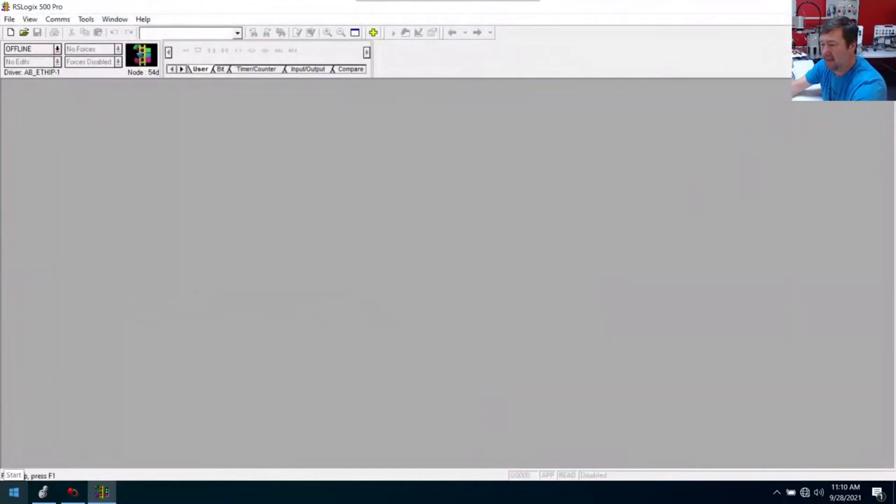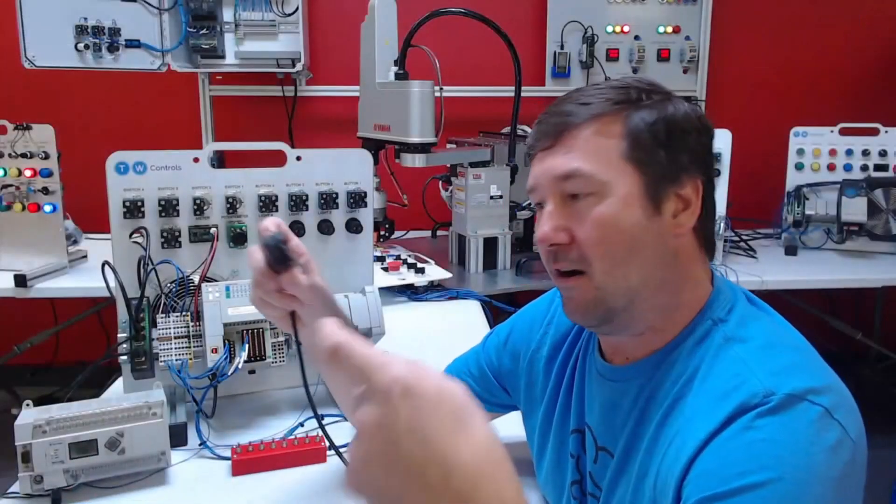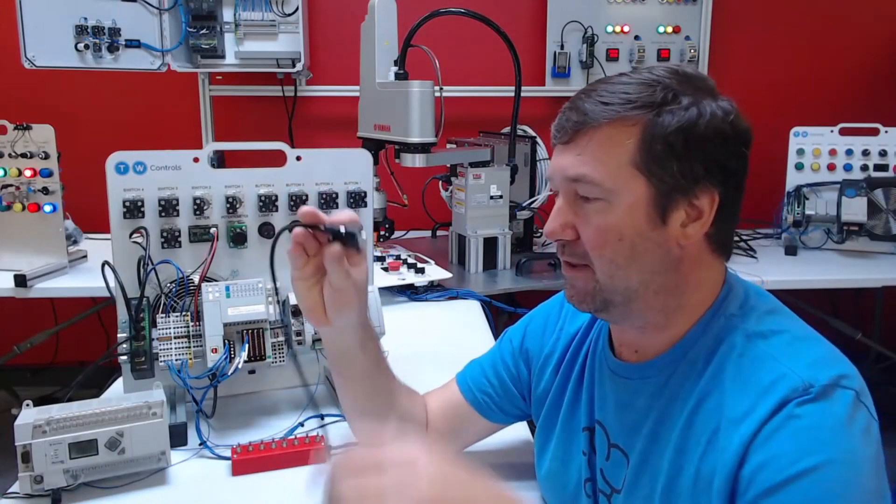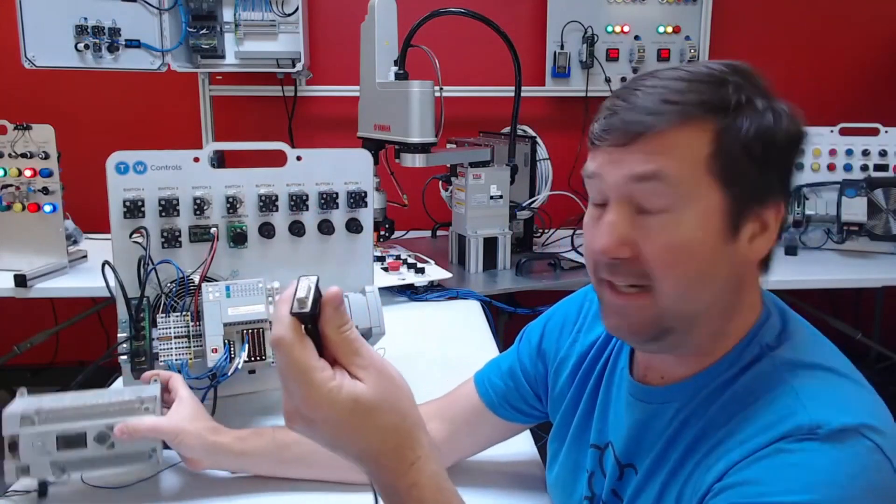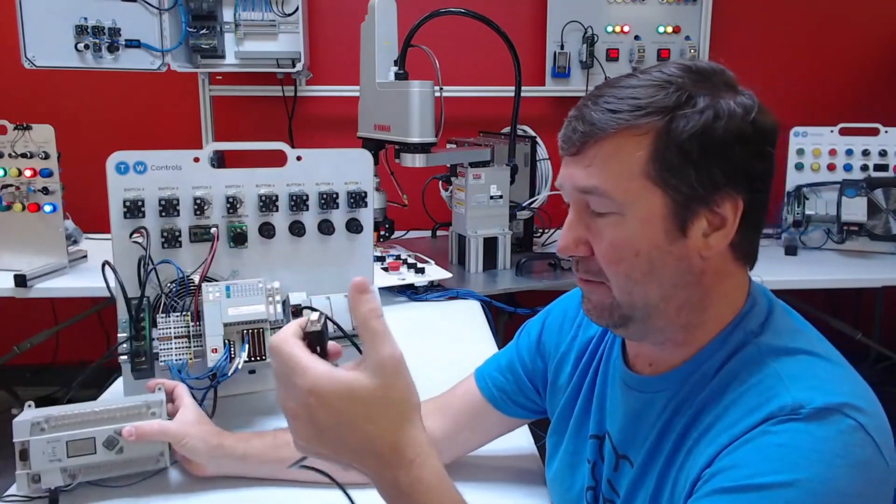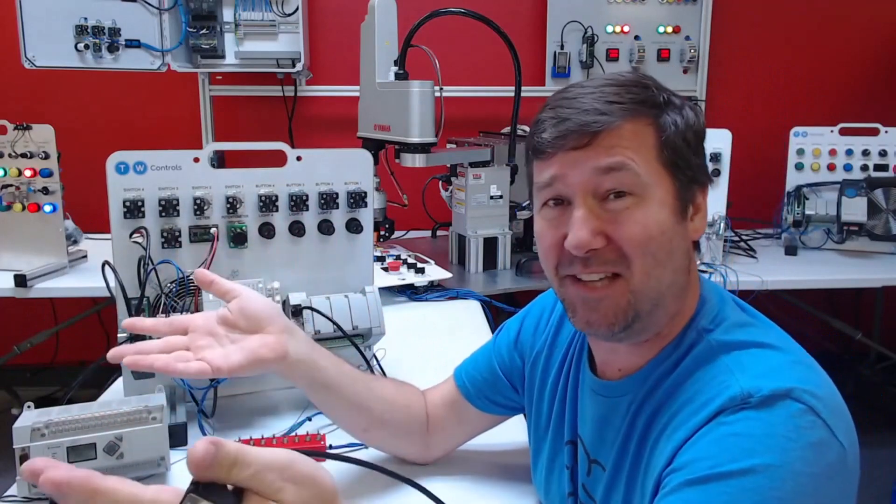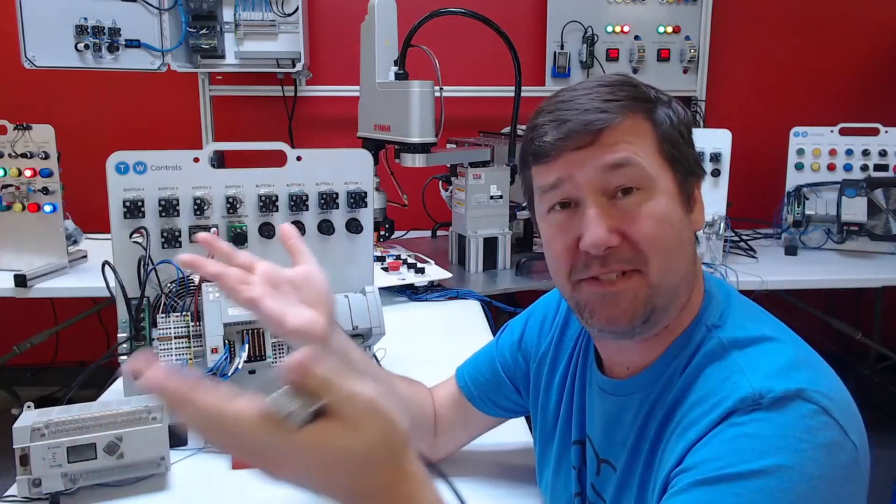But okay first let's talk about connecting our 1747 or a serial cable. And we're going to do that with this Micrologix. And it actually would be very similar. Now a lot of people will say well that's an older cable. Well yeah it kind of is. But there's a lot of times that we need to connect over something like serial.